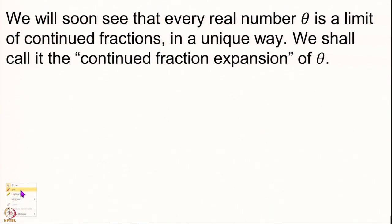We are not just looking at any limit of continued fractions approximating a given real number theta. We would like these continued fractions to be related to each other in the sense that the nth continued fraction is obtained from the (n−1)th only by adding one last entry at the last level. This is how we would want to proceed, and we would call such an expansion a continued fraction expansion of theta.